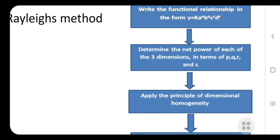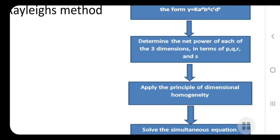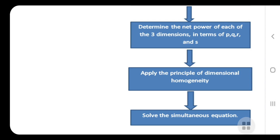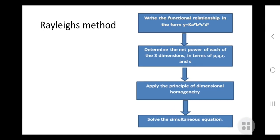Then you have to determine the net power of each of the three dimensions in terms of p, q, r, and s. Then apply the principle of dimensional homogeneity and then solve the simultaneous equations one by one. This is the procedure for the Rayleigh method. If the interviewer asks about the Rayleigh method procedure, you can describe these steps.